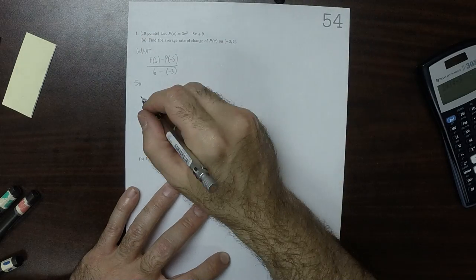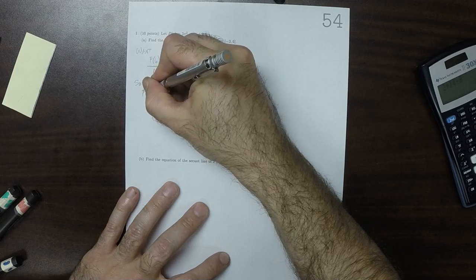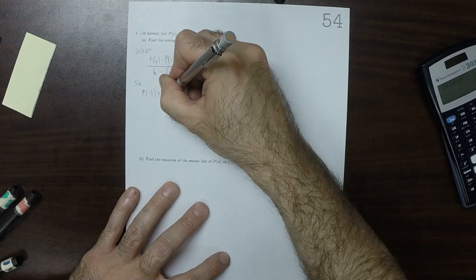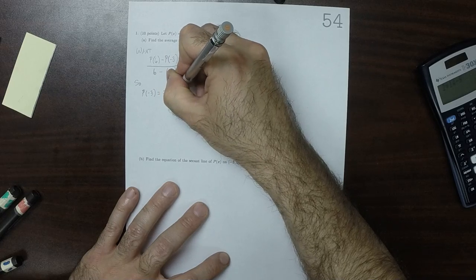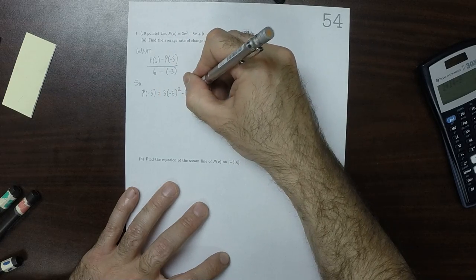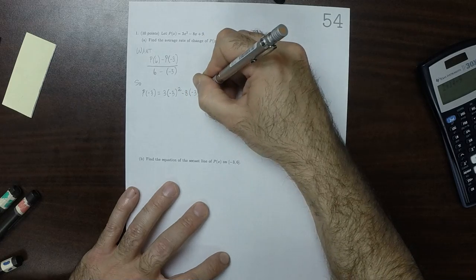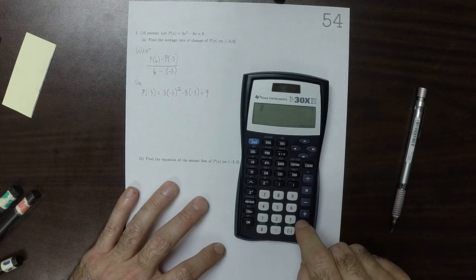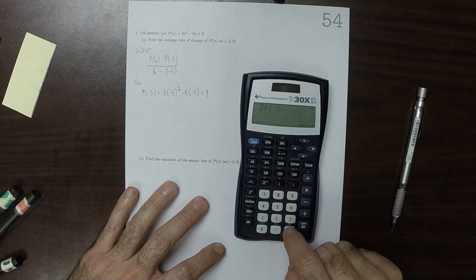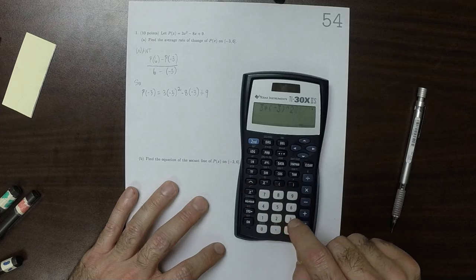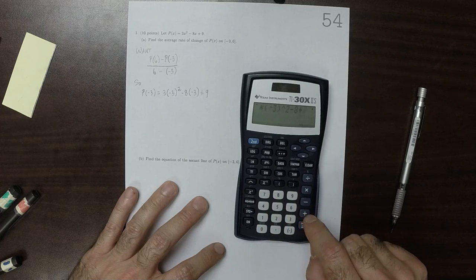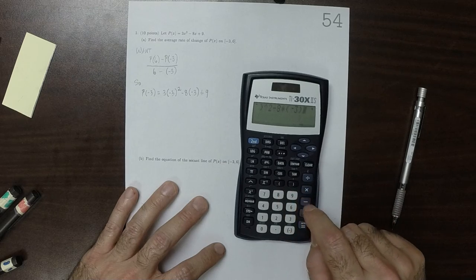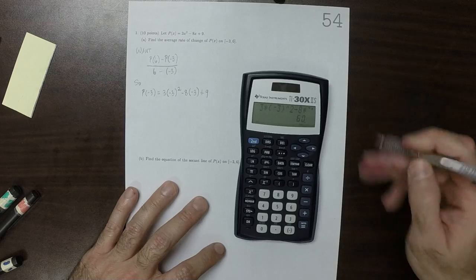So to that end, plug in the various things. So p evaluated at negative 3, that would be 3 multiplied by negative 3 squared minus 8 multiplied by negative 3 plus 9. So plugging that in, 3 multiplied by negative 3 squared minus 8 multiplied by negative 3 plus 9. That'd be 60.